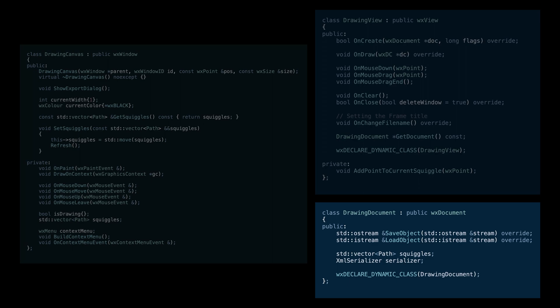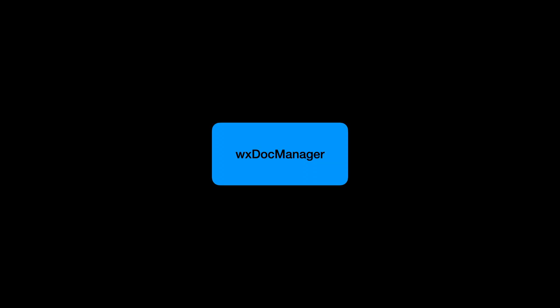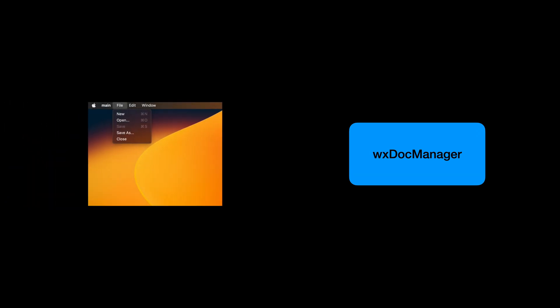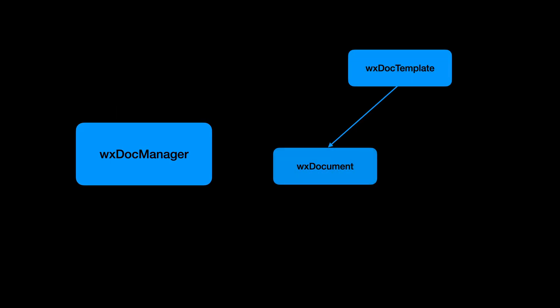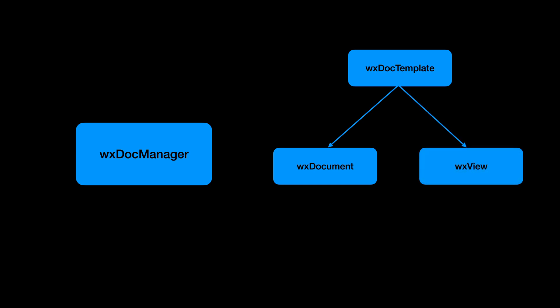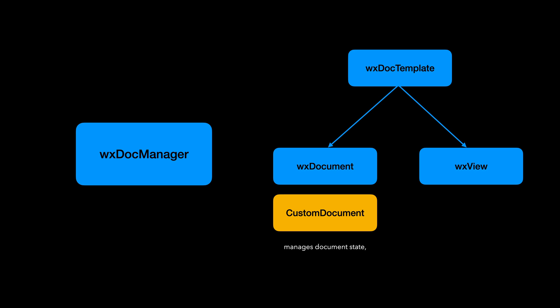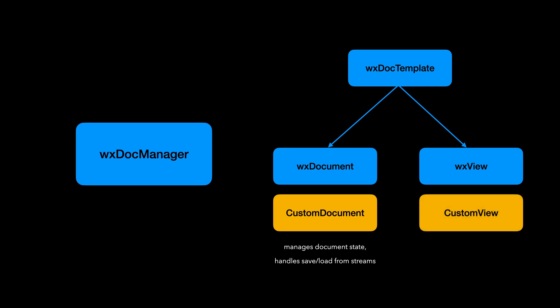The central element of this architecture is WXDocManager. It handles the events and manages the creation and destruction of documents and views. To create a document, it uses WXDocTemplate, which connects the WXDocument with WXView for a given file type. We need to subclass the WXDocument class, where we manage the document's data, and implement saving and loading it from streams. We update the document and the UI in the WXView subclass, which acts as a proxy between the two.